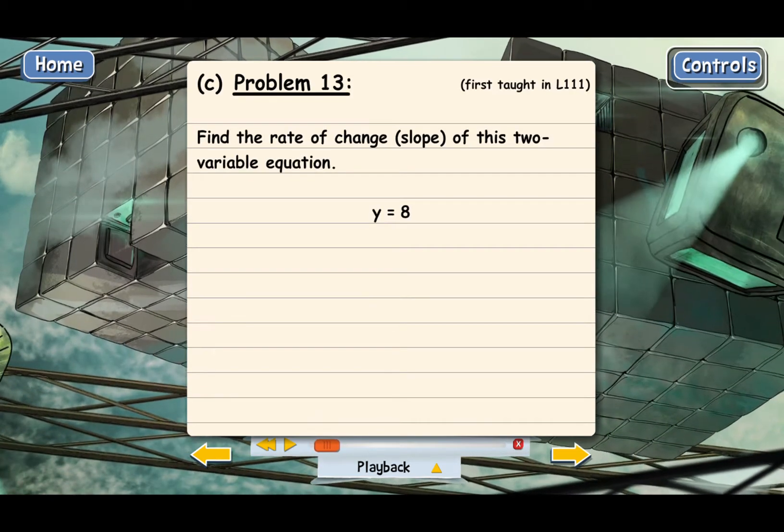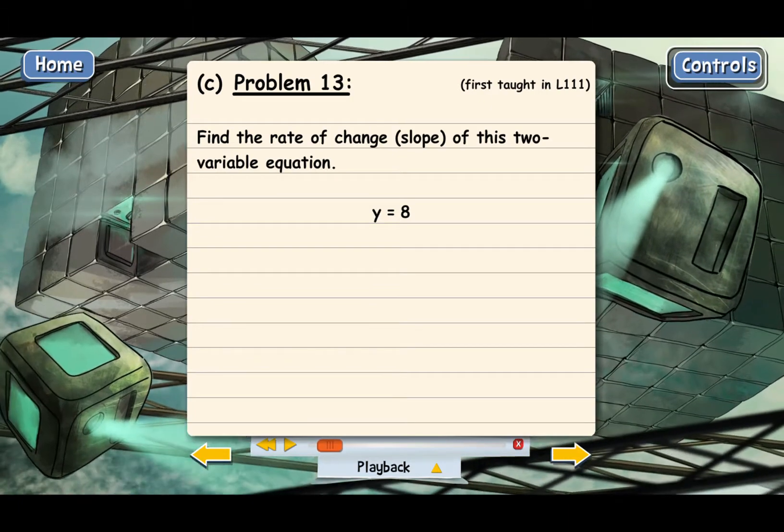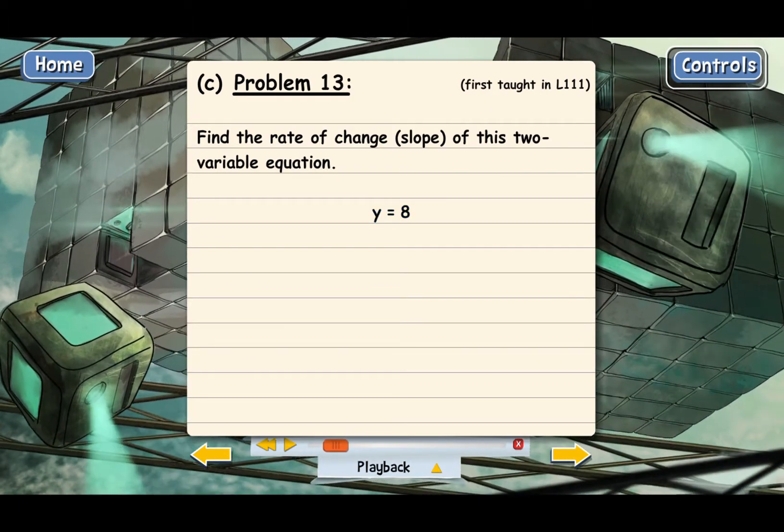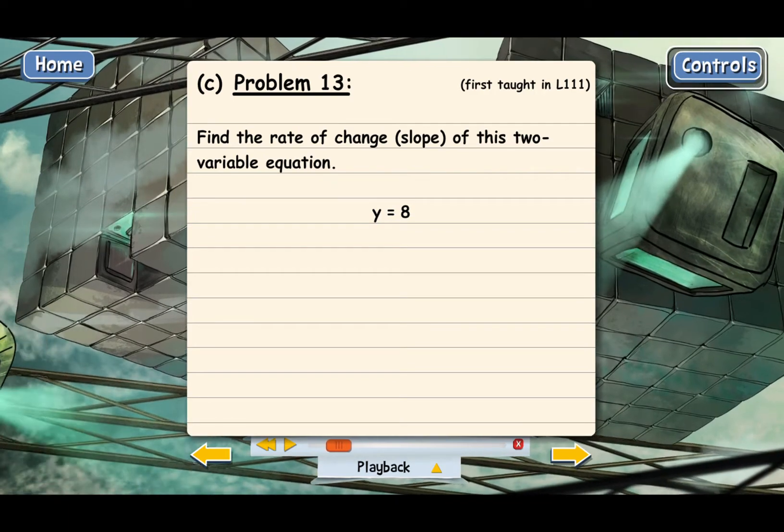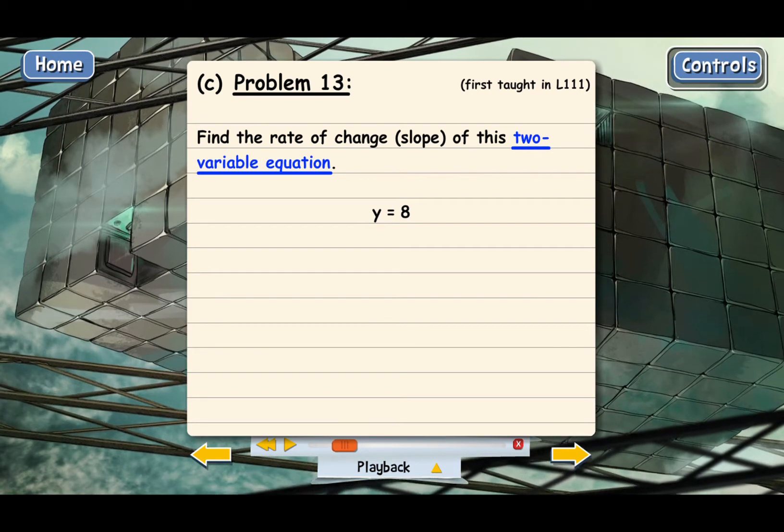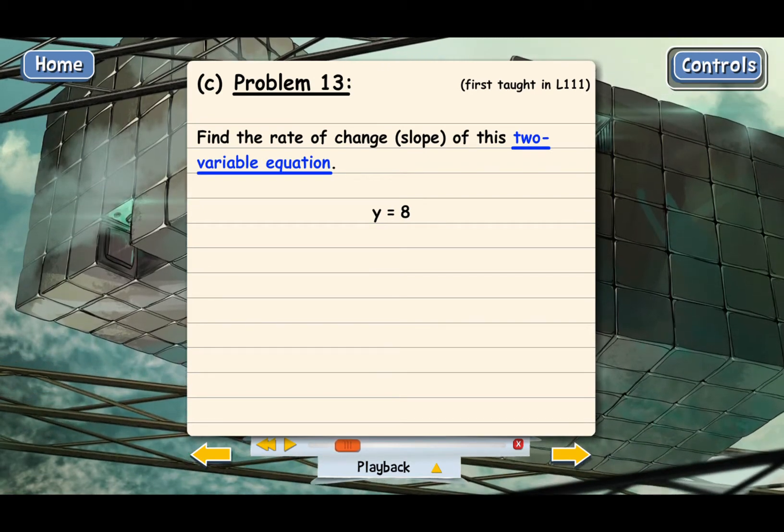We need to find the rate of change between the variables for the equation y equals 8. Since the directions tell us that we're looking for the change between the variables, we know that this is going to be a two-variable equation that can be graphed on a coordinate plane.